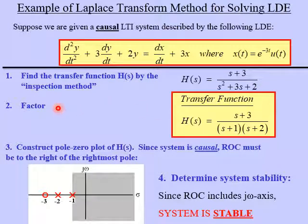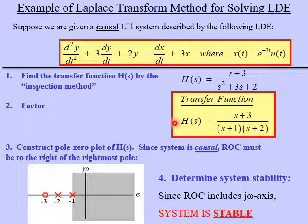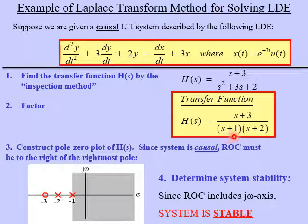In order to go further with this, we're going to need to factor this transfer function. This factors to H(s) equals (s + 3) over (s + 1)(s + 2).